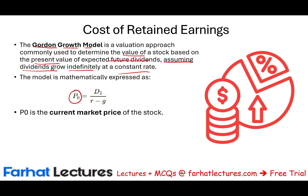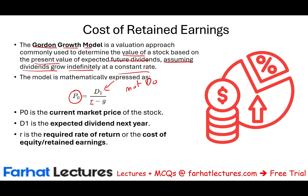The price of the stock today, P0 — if you want to find the price of the stock, you take the expected future dividend D1, not the current dividend D0, and divide D1 by R minus G. R is the expected rate of return, or the required rate of return — what investors expect to earn given the risk for this stock in this industry. R is also what we are going to call today the cost of retained earnings.